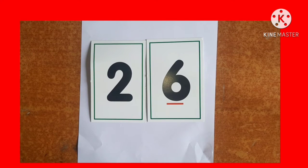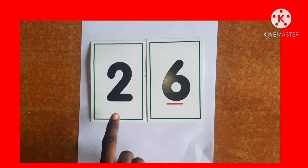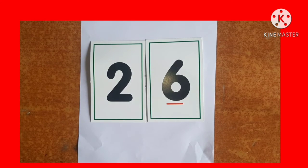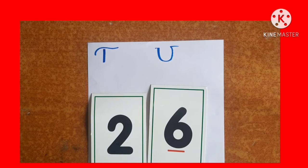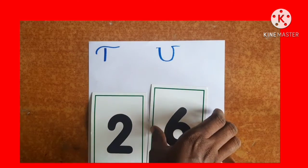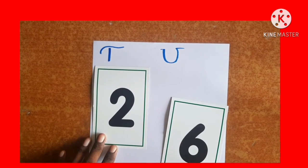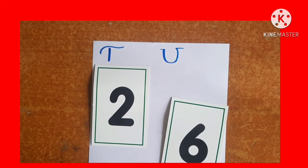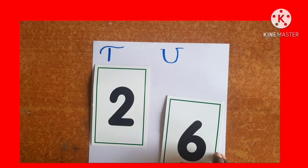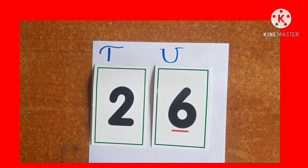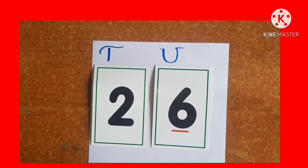Now form the smallest possible 2-digit number using 2 and 6. Which is the smaller number out of 2 and 6? Place it in the smaller place of the place value chart. So you can put 2 in the tens place, and place the other flashcard, 6, in the units place. The smallest possible 2-digit number that can be formed using 2 and 6 is 26.